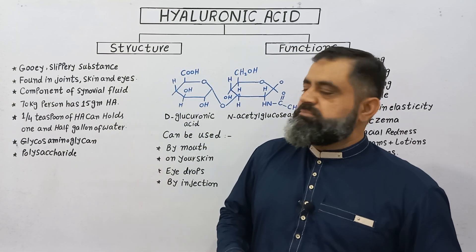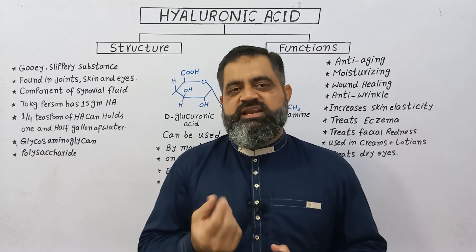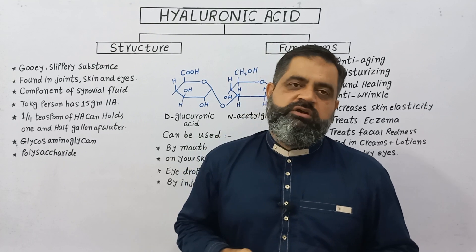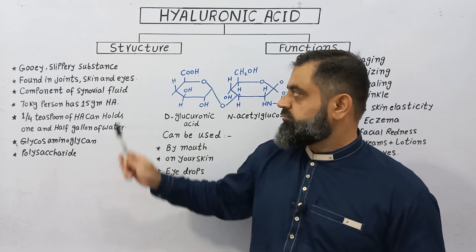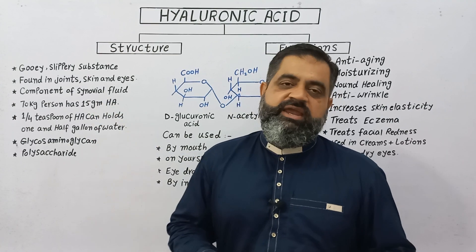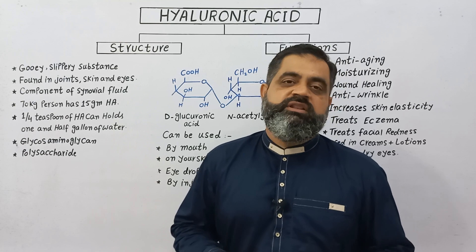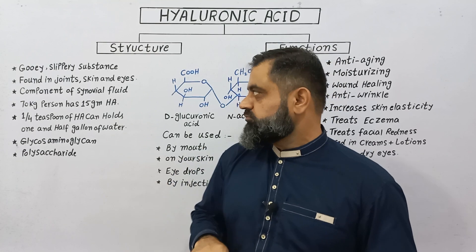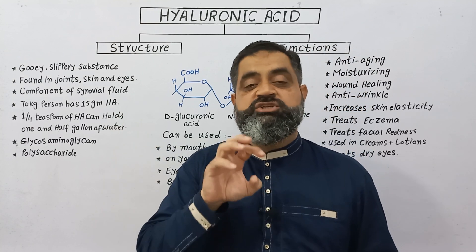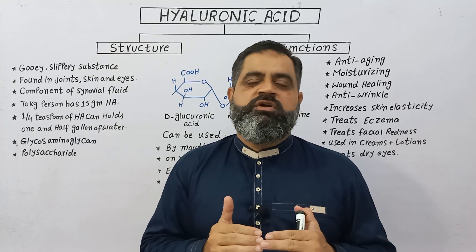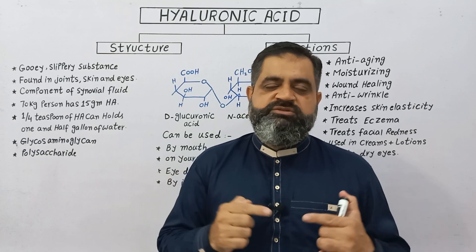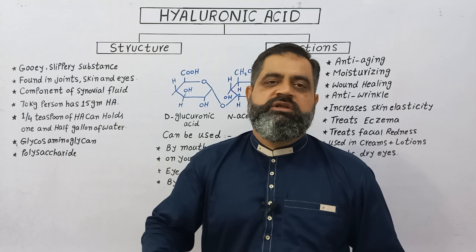This is a gooey, slippery substance, just like saliva in our mouth — a little bit thicker than water and gooey in nature. It is found in and produced in joints in synovial fluid, skin and connective tissue like cartilage, and also found in the eyes and in tears. It is a very important component of synovial fluid, which is present in synovial joints — those joints bounded by synovial membrane where two bones meet, like the shoulder joint, knee joint, and hip joint.